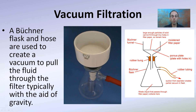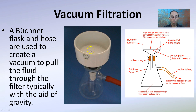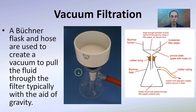There's also vacuum filtration. A Buechner flask and a hose are used to create a vacuum to pull the fluid through the filter, typically with the aid of gravity. Instead of waiting a long time for gravity alone, with this sealed setup pulling a vacuum, you're helping the process along and speeding it up. This is great for substances that may take a very long time to filter using gravity alone.